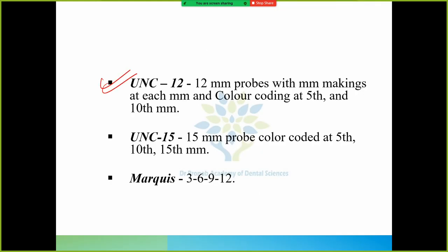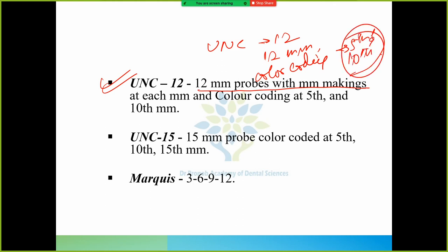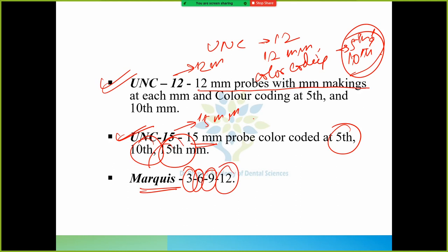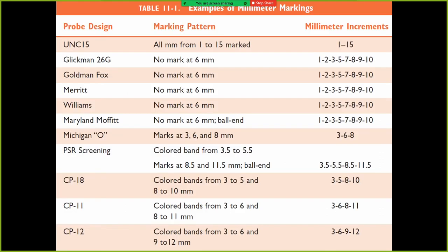UNC and Marquis probes: UNC 12 - 12mm probe with mm markings at each mm and color coding at 5th and 10th mm. UNC 12 has 12mm marking, but color coding at 5th and 10th. You have to remember this. UNC 15 is a 15mm probe - 12 written means 12mm, 15 written means 15mm probe. It has marking at 5th, at 10th, and at 15. Marquis probe has marking at 3, 6, 9th, and 12. So you have to memorize all this - nothing much to explain, this is self explanatory. Take a photo of this chart for your PG preparation - you need this one.